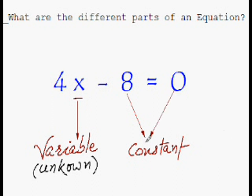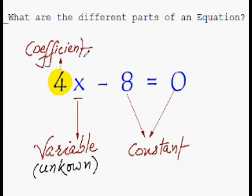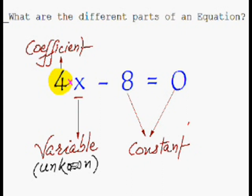The last part — the 4 — is called the coefficient. One very important thing to note is that the operation between this coefficient and the variable is always multiplication; there is an invisible multiplication sign in between. Please always remember that.